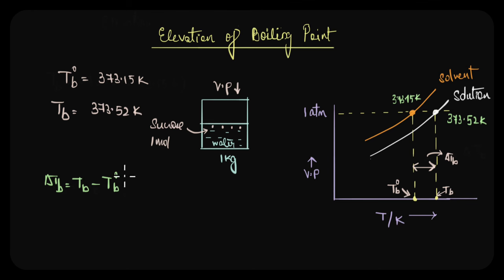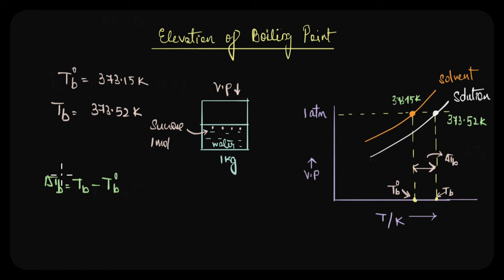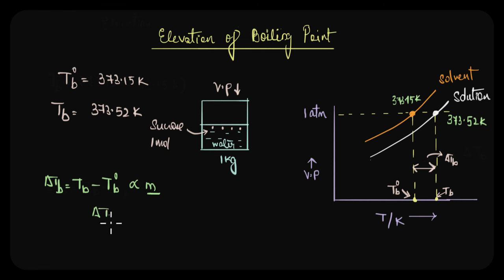For dilute solutions, this elevation in boiling point is directly proportional to the molar concentration of the solute — and we are talking about molality here, not molarity. Removing the proportionality, we get: delta Tb equals Kb times molality. This Kb is called the molal elevation constant, or the boiling point elevation constant.